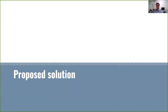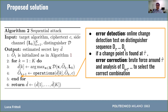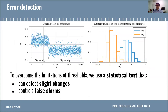Now let's see our proposed solution. We propose to add to the standard sequential attacks two more steps to be performed after each iteration. The first is a change detection procedure, which consists of an online statistical test to detect distribution changes in the sequence of distinguisher values. When a change is detected, we activate the second step, which is a correction procedure, consisting of a brute force search over a small window centered at the detected change point, and a statistical analysis of the distinguisher to select the correct combination.